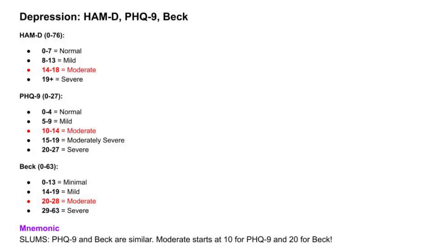Depression severity is often measured using standardized scales to assess symptoms and guide treatment. Let's break down three commonly used tools: the Hamilton Depression Rating Scale (HAM-D), the Patient Health Questionnaire-9 (PHQ-9), and the Beck Depression Inventory (BDI). These scales measure depression severity — pay attention to the cutoffs.